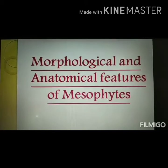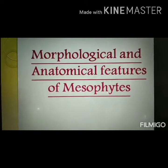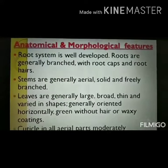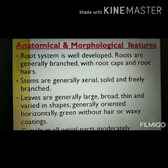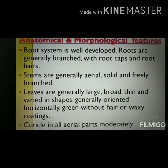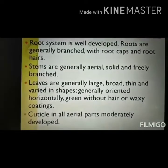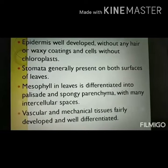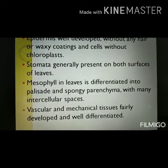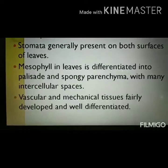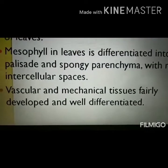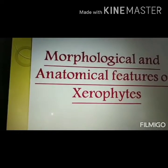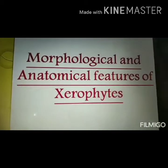Moving on to mesophytes: their root system is well developed, stems are generally aerial and solid in nature, and leaves are larger and broad with a cuticle present. The epidermis is well developed, stomata are present on both surfaces, and the leaf mesophyll is differentiated into palisade and spongy parenchyma. They have a well-developed vascular tissue system.